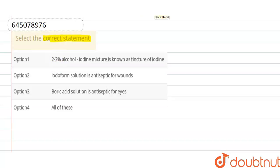In option one, the statement is: 2-3% alcohol-iodine mixture is known as tincture of iodine. Yes, this statement is correct. The mixture of iodine and alcohol in water is known as tincture of iodine, and this tincture of iodine is used as an antiseptic as it has major antiseptic properties.